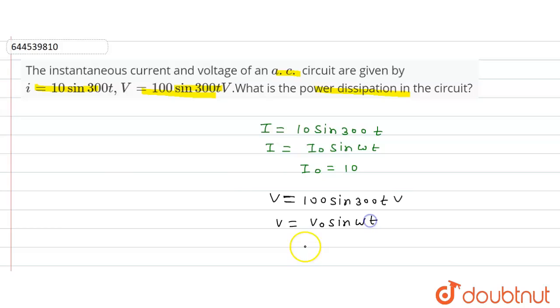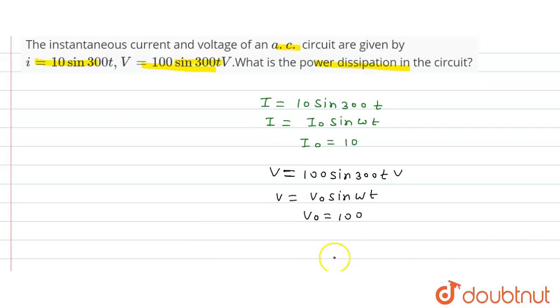When we compare both voltage equations, we get V₀ = 100. Now, we have to calculate power P. Power P = (i₀/√2) × (V₀/√2).